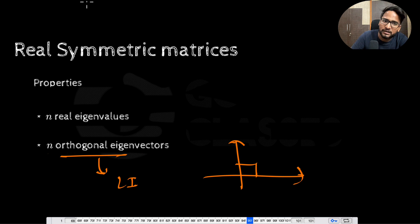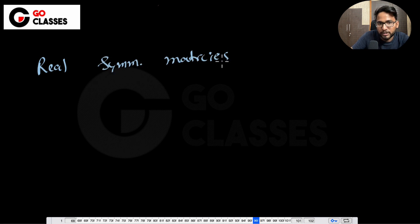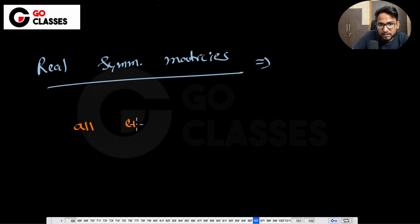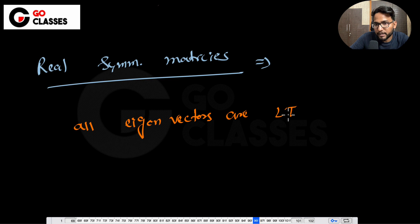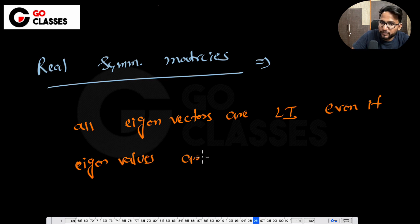So if you have a real symmetric matrix, you have n real eigenvalues and all eigenvectors are linearly independent — even if eigenvalues are repeating. That's the key property of real symmetric matrices.